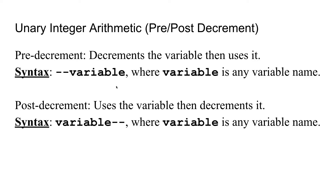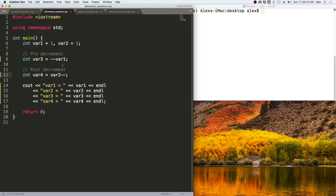Now let's talk about the unary integer arithmetic operators: pre- and post-decrement. Pre- and post-decrement are just like the increment versions, except you are decrementing the variable instead. The pre-decrement will decrement the variable and then use it; its syntax is --variable. The post-decrement uses the variable and then decrements it; its syntax is variable--.